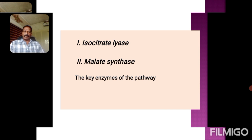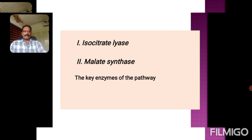The key enzymes involved in the glyoxylate cycle — as distinct from the TCA cycle — are isocitrate lyase and malate synthase, as we will be seeing.